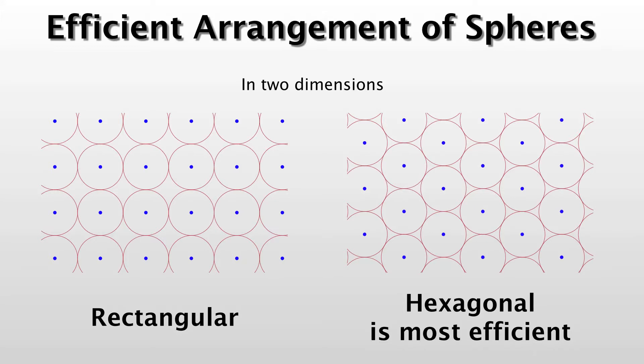On the left hand side is a two-dimensional arrangement of spheres which is rectangular. So we put the spheres onto a grid, but instead on the right side if you use a hexagonal arrangement the packing is much more efficient. And you can see this just by looking at the space in between the spheres. So there's a lot of space in between the spheres here but much less there.